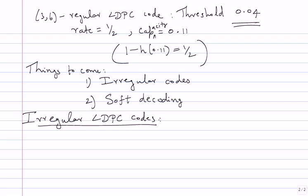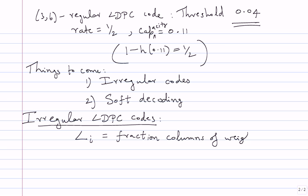For notation and specification of irregular codes: first thing — we always initially specify codes with block length, but for LDPC codes we start with column weights and row weights and go to a block length large enough where this can be accomplished. I will use the notation capital L_i to be the fraction of columns of weight i.